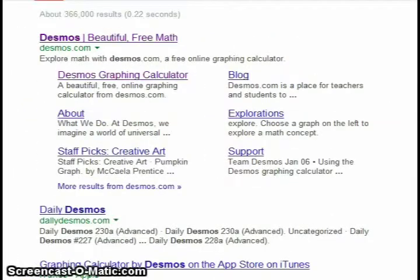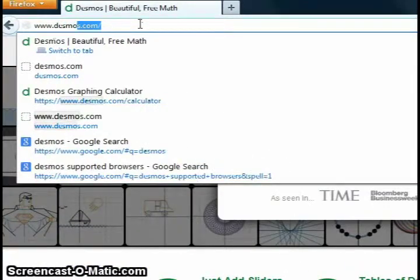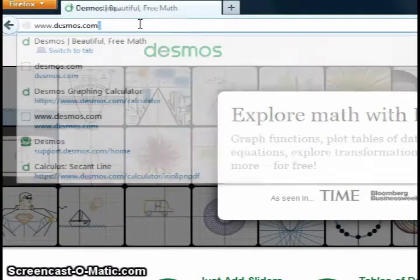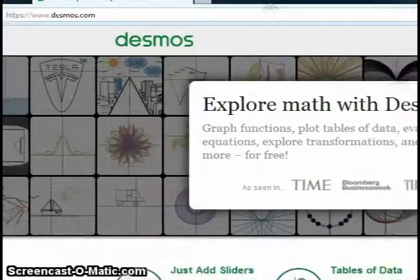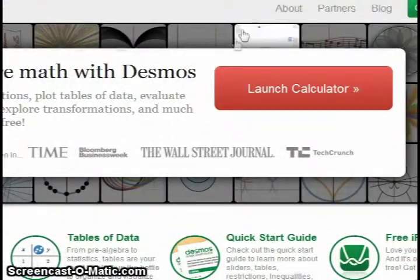Once your browser loads, you may either use a search engine and type in Desmos or enter the URL www.desmos.com. Once you are on the main page, click on the button that says launch calculator. You will then be redirected to the Desmos main page.